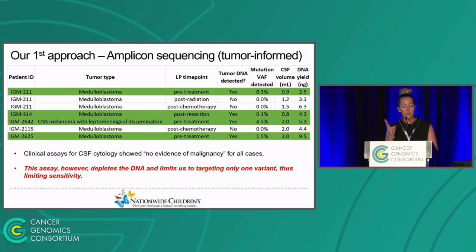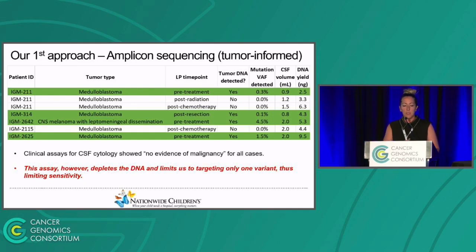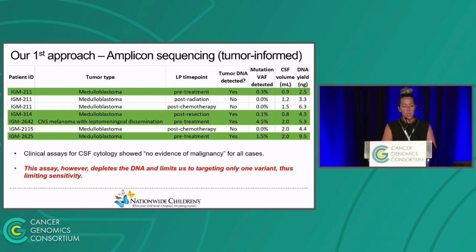This assay has two major limitations. One is that it depletes the DNA, resulting in very low yield. And it limits us to targeting only one variant. But this was proof of principle—we wanted to see that this would even work. It also demonstrated that from low volumes of CSF, we could isolate enough yield of cell-free DNA to perhaps perform these sequencing assays.